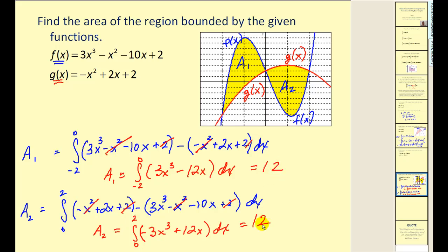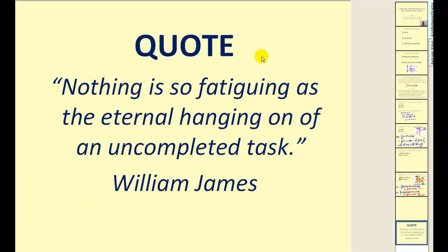Therefore, we take the sum of these two to find the total area, so the total area equals 24 square units. It's interesting that these two areas are the same, even though they are different shapes. I hope you found this video helpful. Thank you, and have a good day.